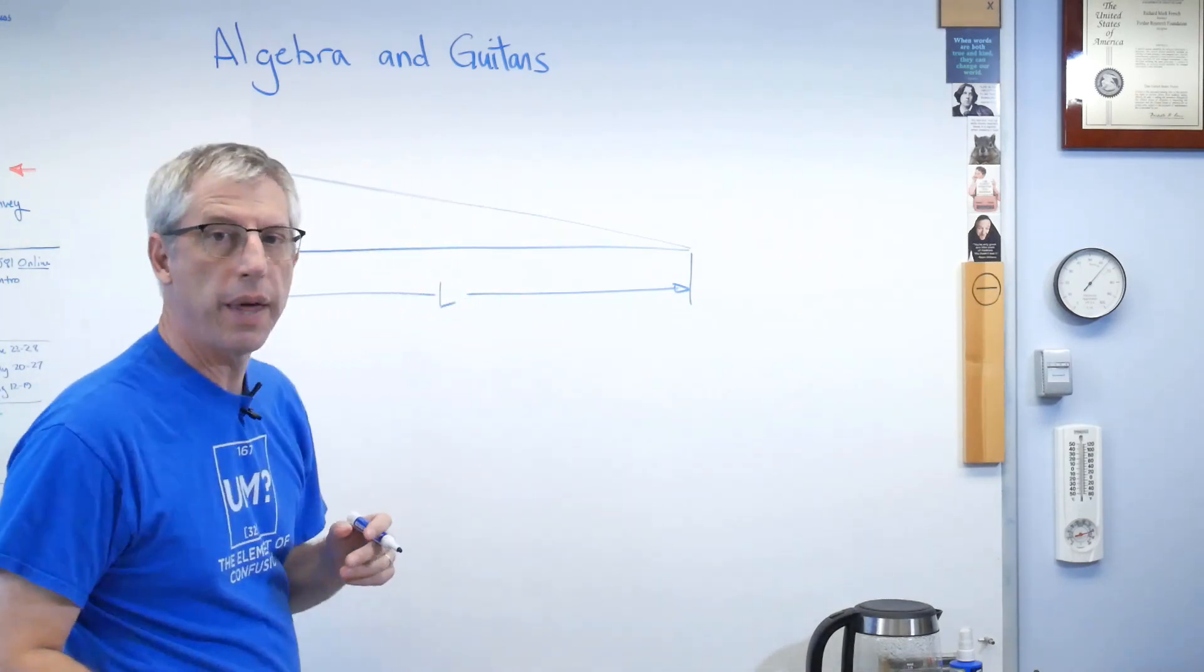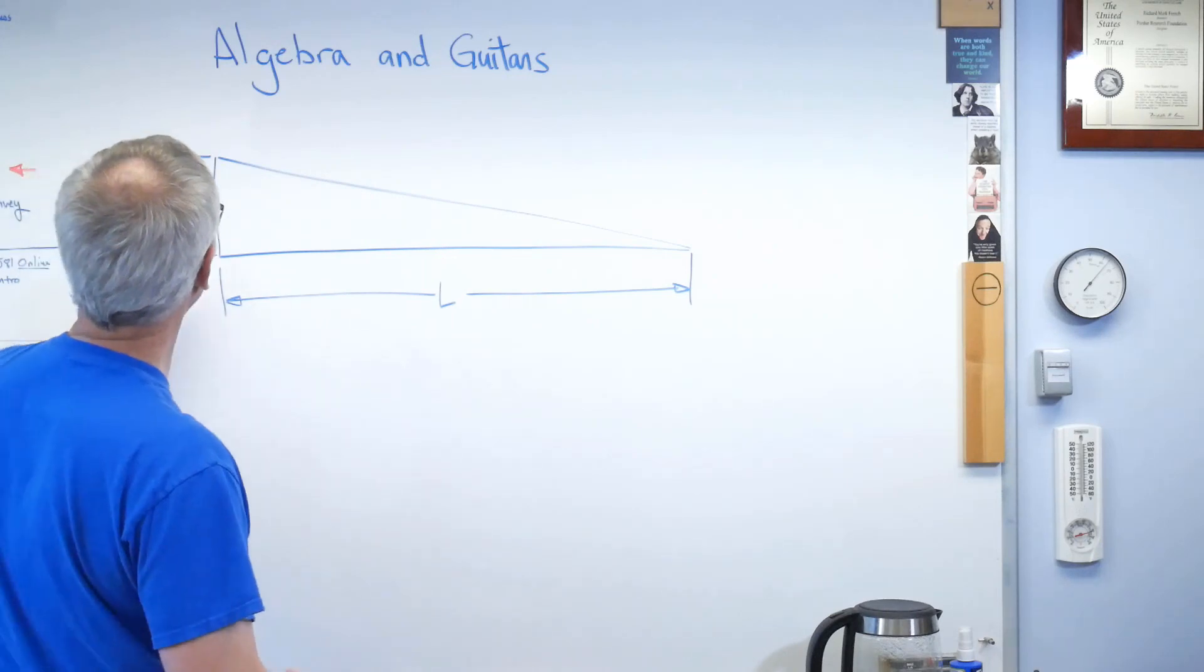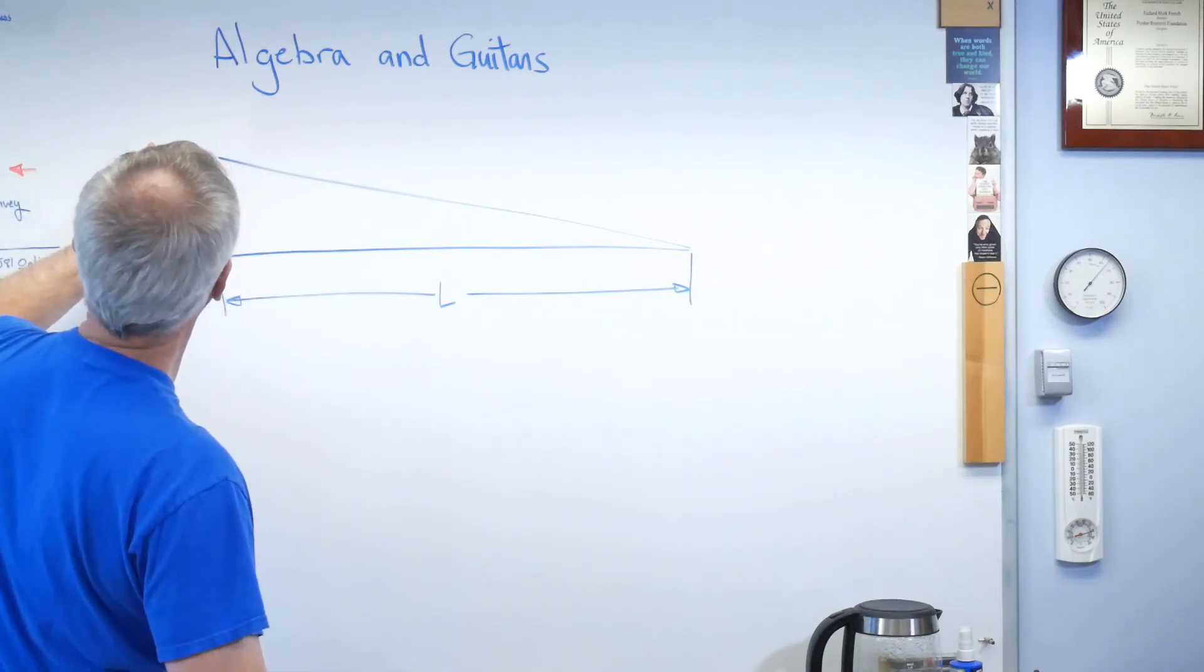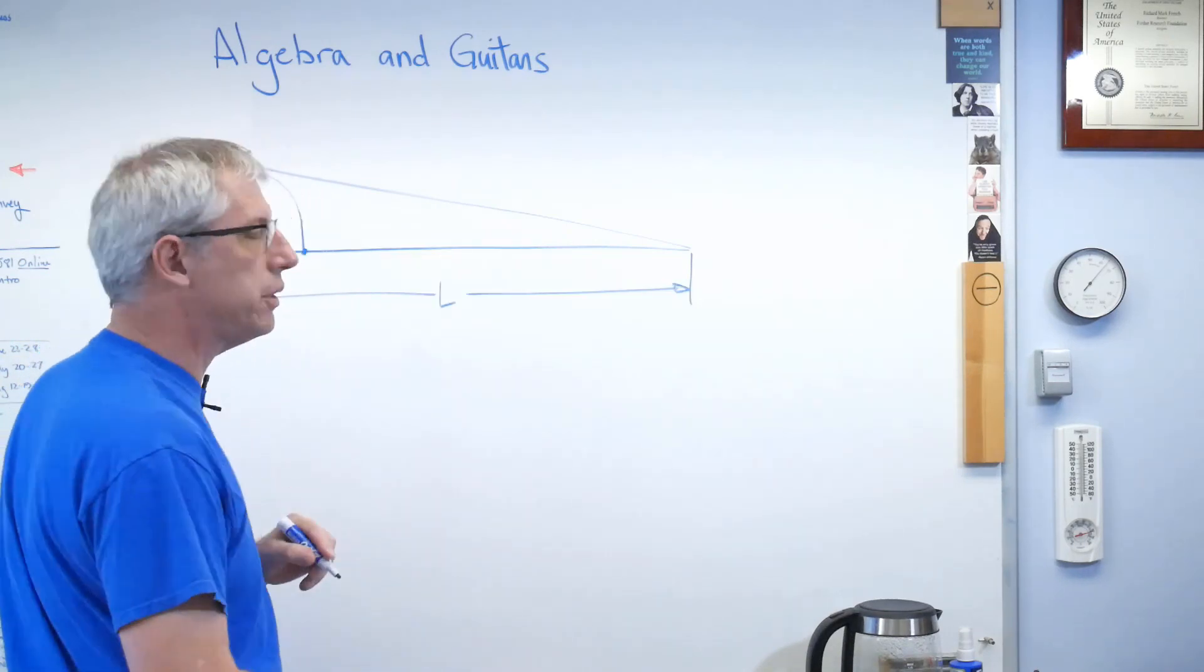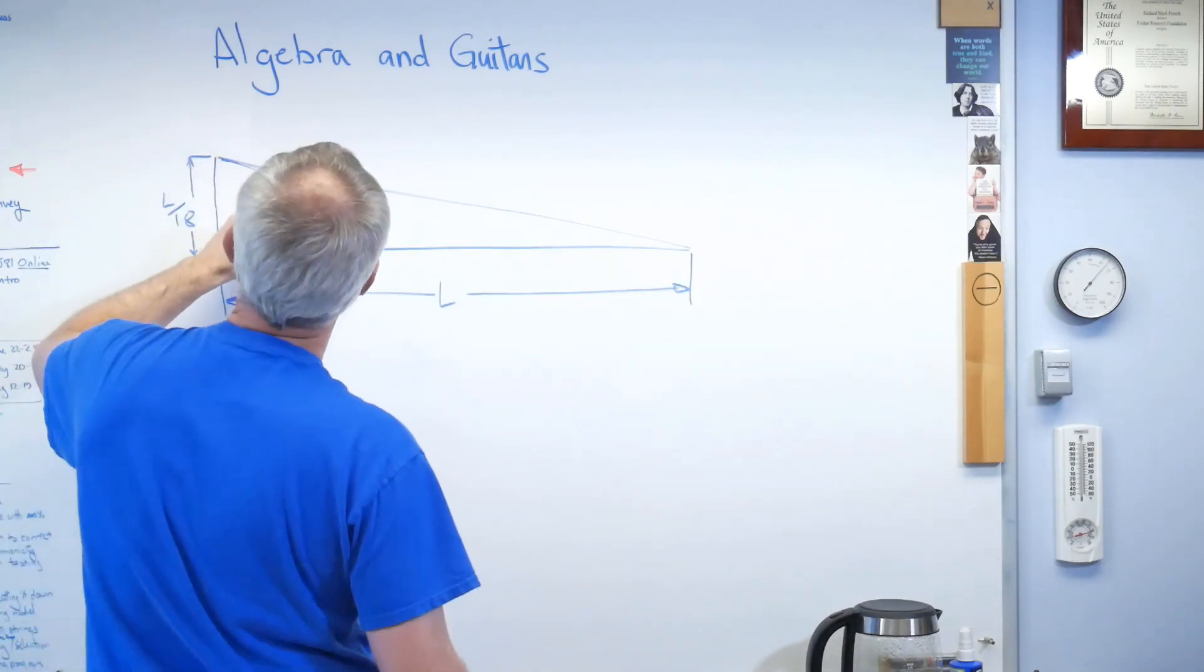This distance right there is L over 18. Okay. That's going to be the location of the first fret. Well, grab a compass and swing that down to here. Okay. There's the location of the first fret.